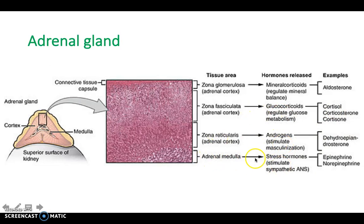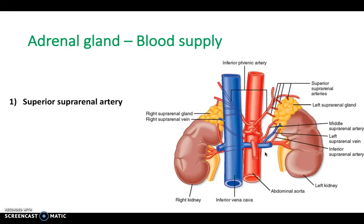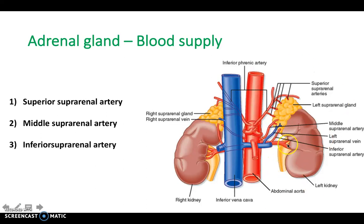The adrenal medulla produces catecholamines such as epinephrine and norepinephrine — adrenaline and noradrenaline — which stimulate the sympathetic autonomic nervous system. In terms of blood supply, the adrenal glands have a triple blood supply from the superior, middle, and inferior suprarenal arteries. The inferior suprarenal artery comes from the renal artery, the middle suprarenal artery comes directly off the aorta, and the superior suprarenal artery comes off a branch of the aorta.